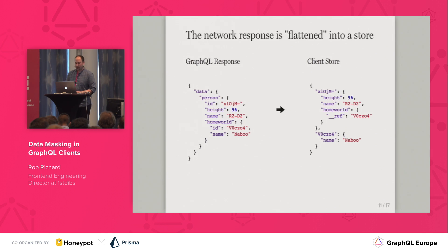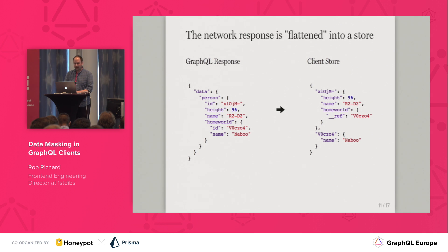Each object returned by the GraphQL server is put into a flattened store object. The ID returned by the GraphQL server is used as the key. If there were more objects in this response, they would each be added as separate keys on the top level of this object.